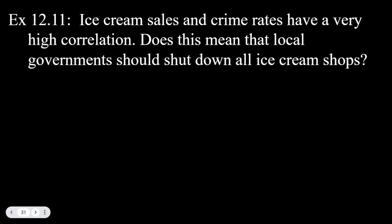Example 12.11 illustrates this further: ice cream sales and crime rates have a very high correlation. Does that mean local government should shut down ice cream shops to fight crime? No. Both ice cream sales and crime rise in summer when weather is warm and people are outside more. Just because there is a correlation between two things does not mean there is a direct causal relationship between them.